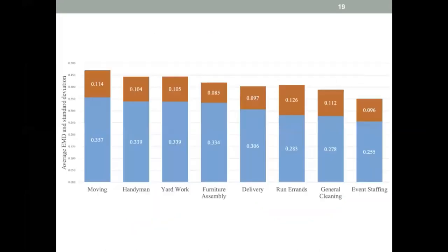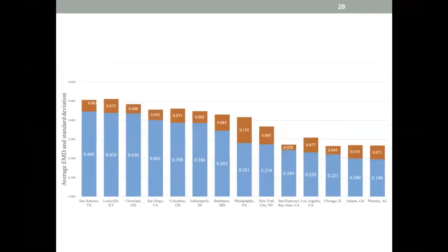Another view is to look at the most versus least discriminatory jobs. For instance, moving and handyman are the most discriminatory, while event staffing is the least discriminatory. This can also be viewed from the perspective of cities — what cities are most versus least discriminatory.